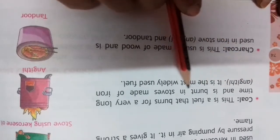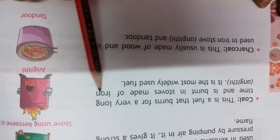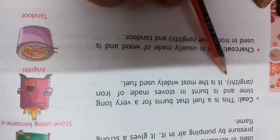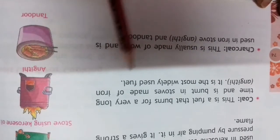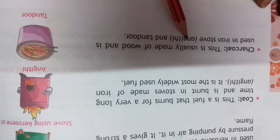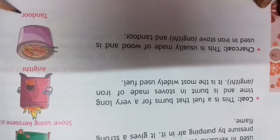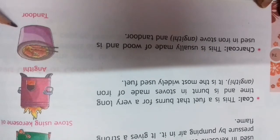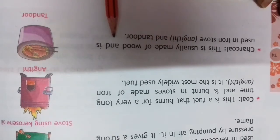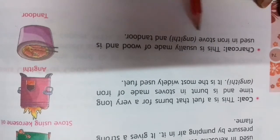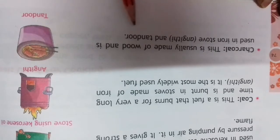It is the most widely used fuel. Then charcoal. Charcoal is used in tandoor. This is made of wood and is used in iron stove and tandoor.